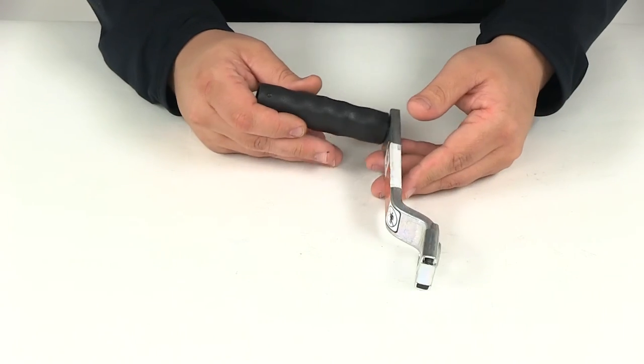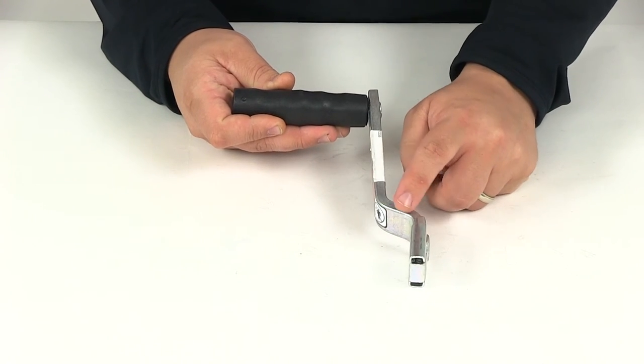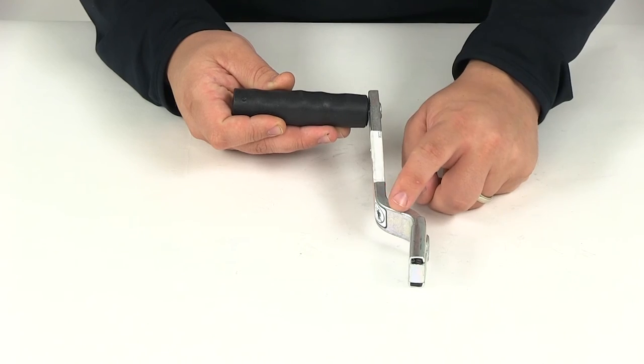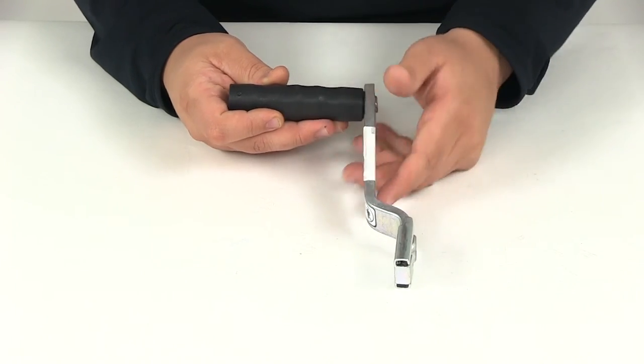And then this handle does offer a slight offset. That's going to be this portion here. That's designed to help you clear obstacles and accessories that you may have on your trailer.